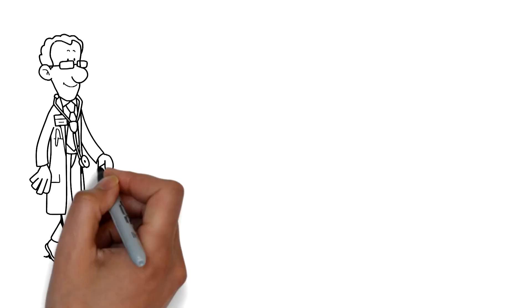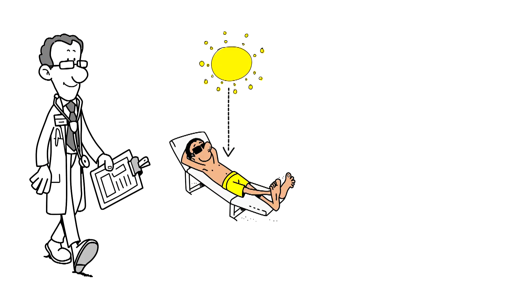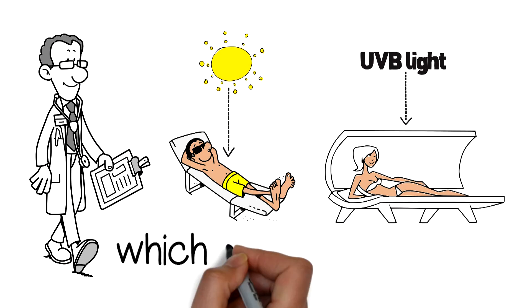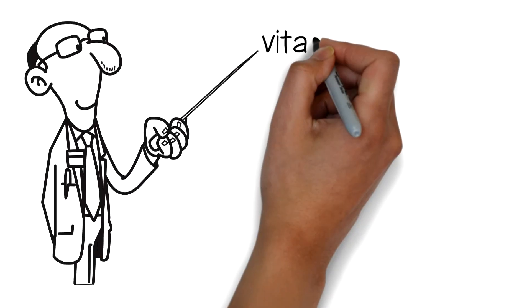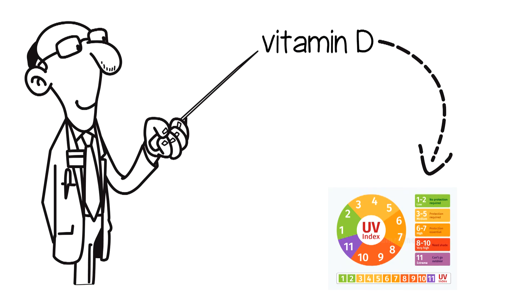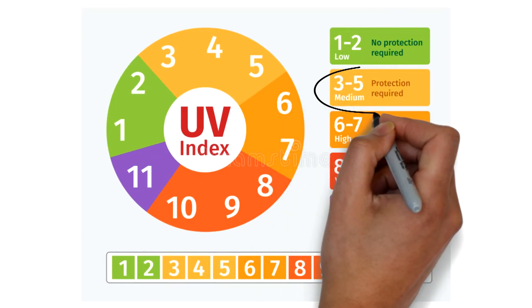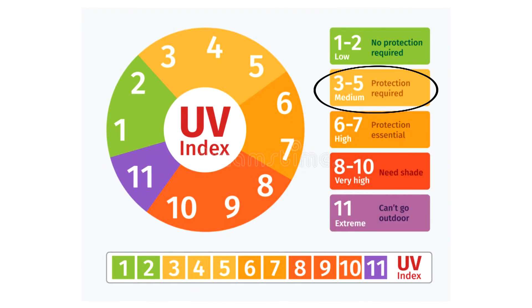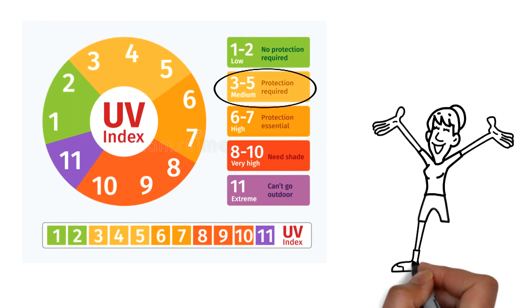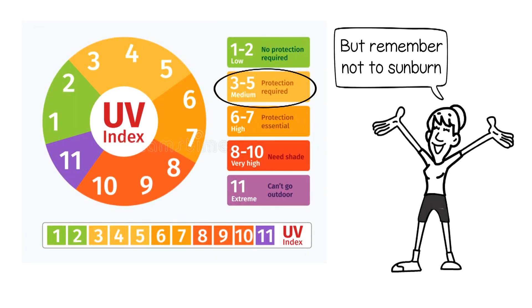Research shows you can make vitamin D from either the sun or a sun bed that emits UVB light, which most sun beds do. To make vitamin D outside from late spring to early fall, it's recommended that the UV index be above 3, and your shadow is shorter than you are without sunscreen on. But remember not to sunburn!